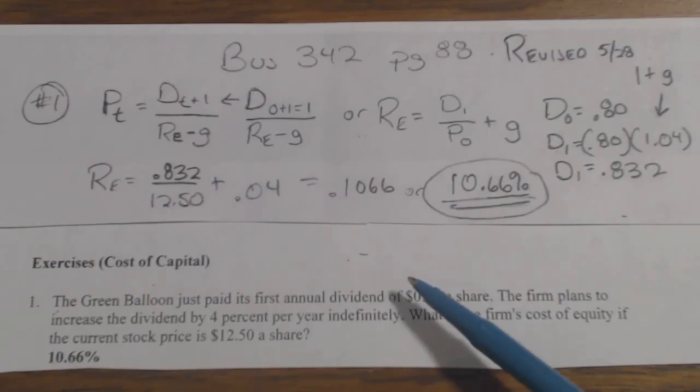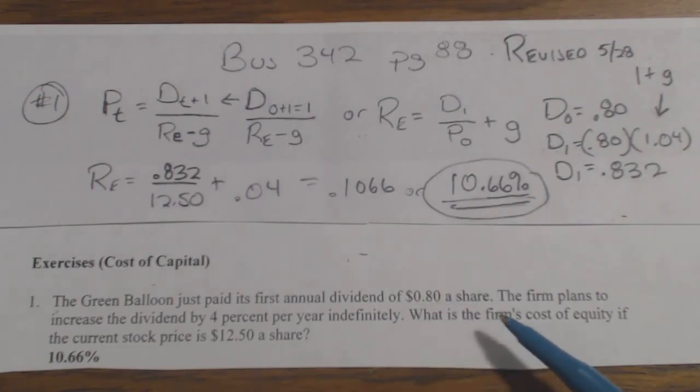The next dividend would be D1, but this is D0. So the dividend is 80 cents a share that it just paid. The firm plans to increase the dividend by 4% per year indefinitely. What is the firm's cost of equity if the current stock price is $12.50?